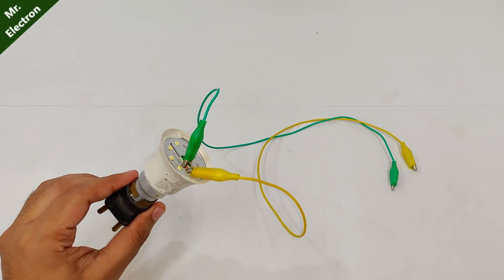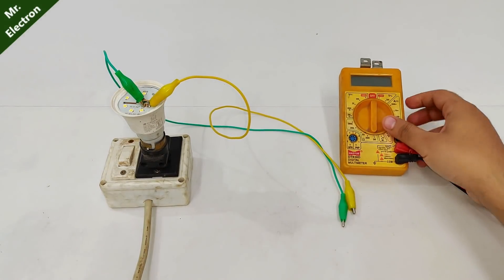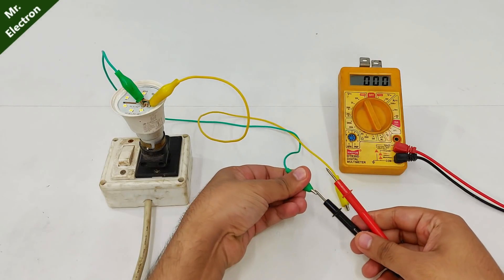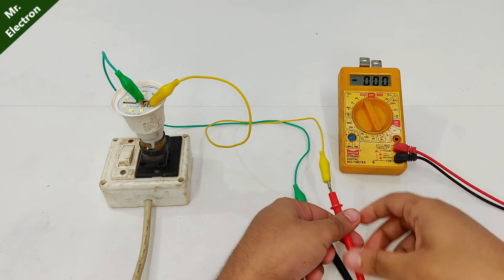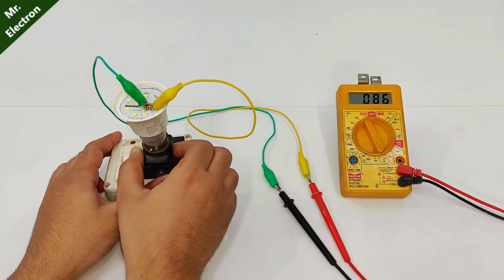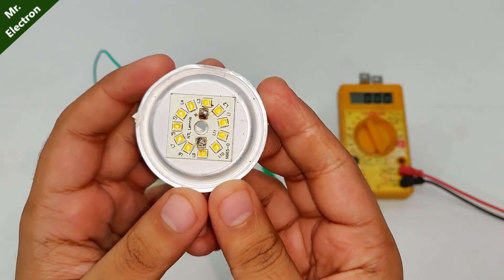Next you have to take a multimeter and move its pointer towards 1000 volts DC mode. After that, connect the multimeter pins to the jumper cables and then turn on the supply. And here we have 88 volts DC, very high. Turning it off now.